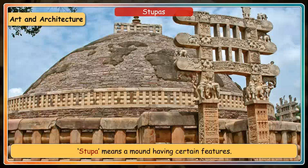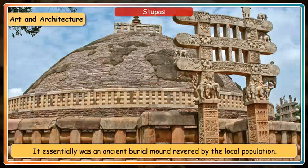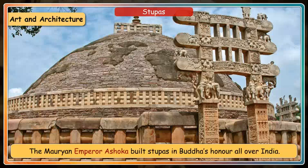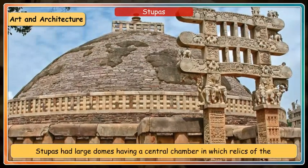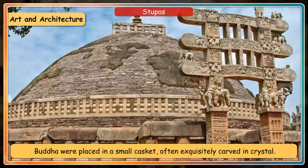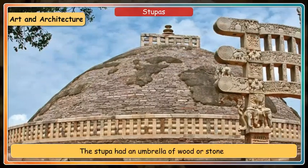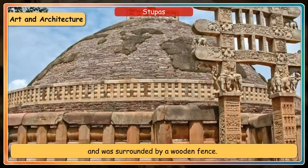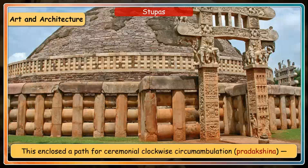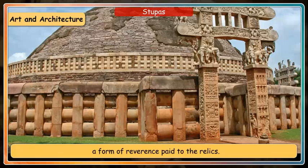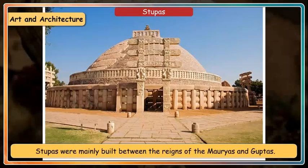Stupa means a mound having certain features; it essentially was an ancient burial mound revered by the local population. The Mauryan emperor Ashoka built stupas in Buddha's honor all over India. Stupas had large domes with a central chamber in which relics of the Buddha were placed in a small casket, often exquisitely carved in crystal. The stupa had an umbrella of wood or stone and was surrounded by a wooden fence, enclosing a path for ceremonial clockwise circumambulation called Pradakshina. Stupas were mainly built between the reigns of the Mauryas and Guptas.